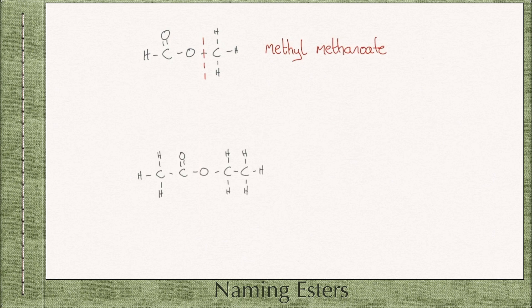Step 1: put a dotted line through the carbon singly bonded to the oxygen to separate both sides. Step 2: count the number of carbons on the side with no oxygens — this is the alkyl group side; in this case it is ethyl. Step 3: count the number of carbons on the side with oxygens — there are two carbons present, so we call this side 'ethanoate'. Step 4: combine the names and the ester is called ethyl ethanoate.